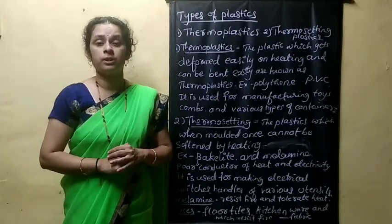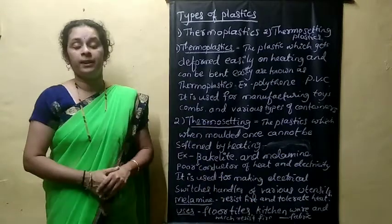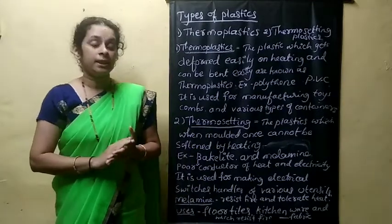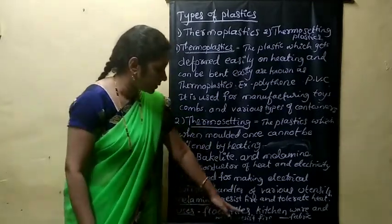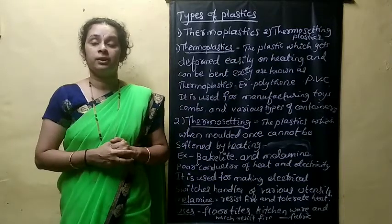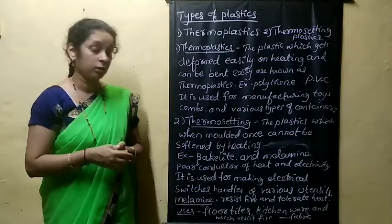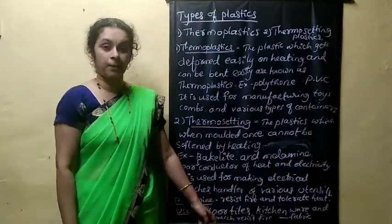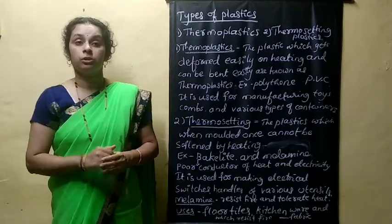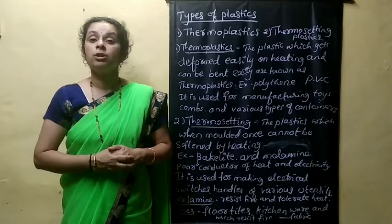Another example of thermosetting plastic is melamine. It is resistant to fire and can tolerate heat. That is why it is used in floor tiles, kitchen wares, and in the preparation of fabrics that can resist fire — such as fire-resistant clothing and fire safety applications. Melamine is thus an important example of thermosetting plastic.